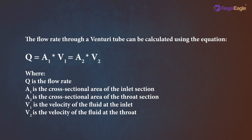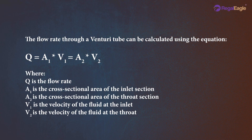The flow rate through a venturi tube can be calculated using the equation Q equals A1 multiplied by V1 equals A2 multiplied by V2, where Q is the flow rate, A1 is the cross-sectional area of the inlet section, A2 is the cross-sectional area of the throat section, V1 is the velocity of the fluid at the inlet, and V2 is the velocity of the fluid at the throat.